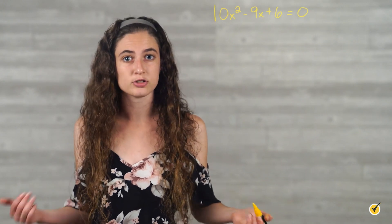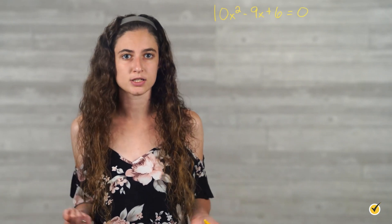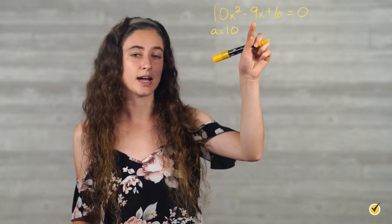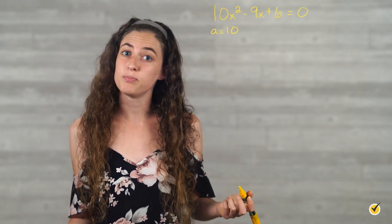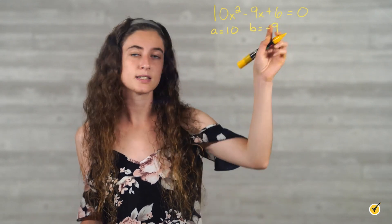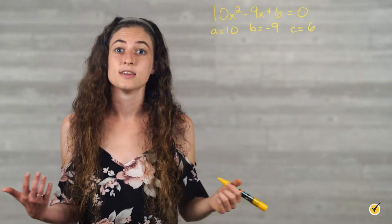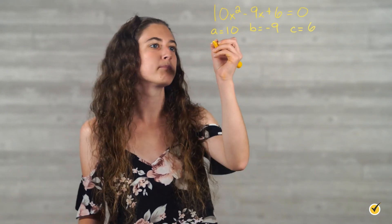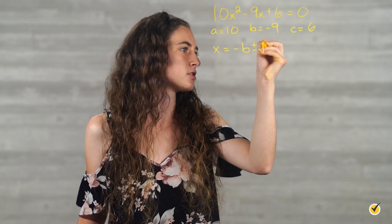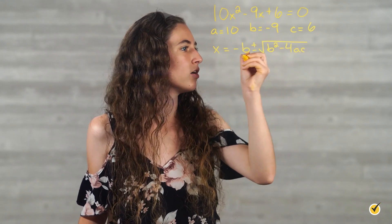First, we need to identify the values for the variables a, b, and c in the quadratic equation. Our first term, 10x squared, tells us that a is equal to 10. Our second term, negative 9x, tells us that the value of b is negative 9. And our third term, plus 6, tells us that c is equal to 6. Now we're going to use the quadratic formula: x is equal to negative b plus or minus the square root of b squared minus 4ac, all over 2a.